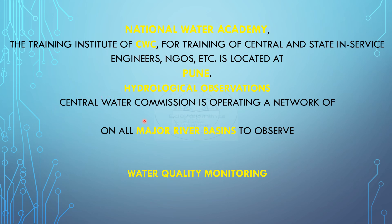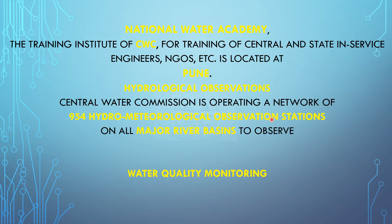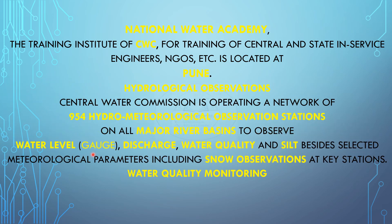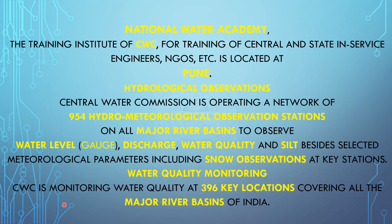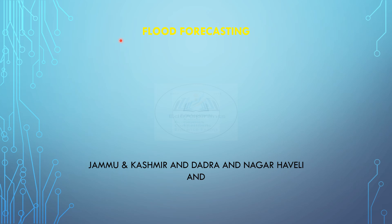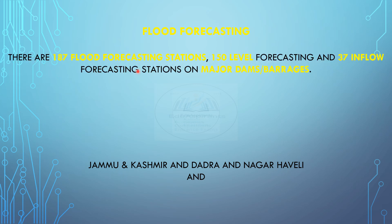For hydrological observations, the Central Water Commission operates a network of 954 hydro-meteorological observation stations on all major river basins in the country to observe water level, gauge, discharge, water quality, and silt, besides selected meteorological parameters including snow observations at key stations. For water quality monitoring, CWC is monitoring water quality at 396 key locations covering all major river basins of India. For flood forecasting, there are 187 flood forecasting stations — 150 level forecasting and 37 inflow forecasting stations on major dams and barrages.